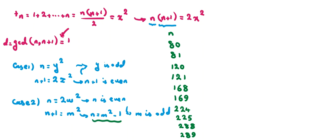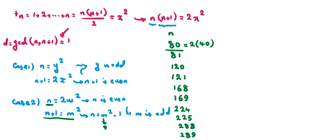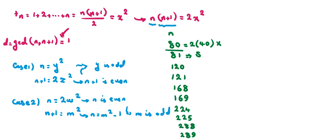If n = 80 (Case 2: 9²−1), then n must be 2 times a perfect square. But 80 = 2×40 and 40 is not a perfect square. For n = 81 (Case 1), n+1 = 82 must be 2 times a perfect square, but 82 = 2×41 and 41 is not a perfect square. Similarly n = 120: 120 = 2×60, not valid. n = 121: 122 = 2×61, not valid.